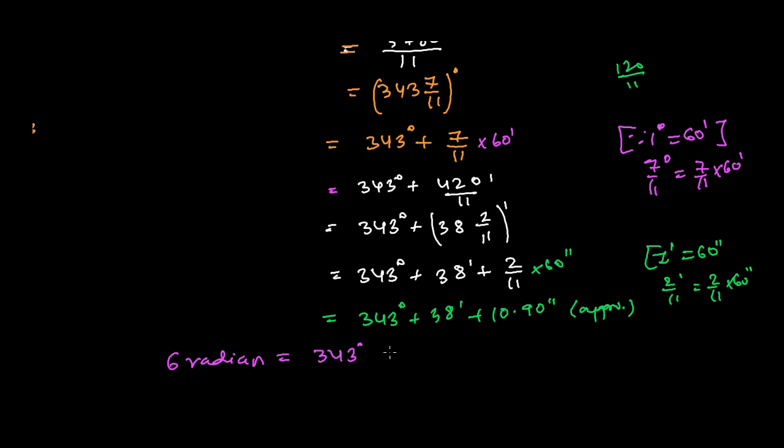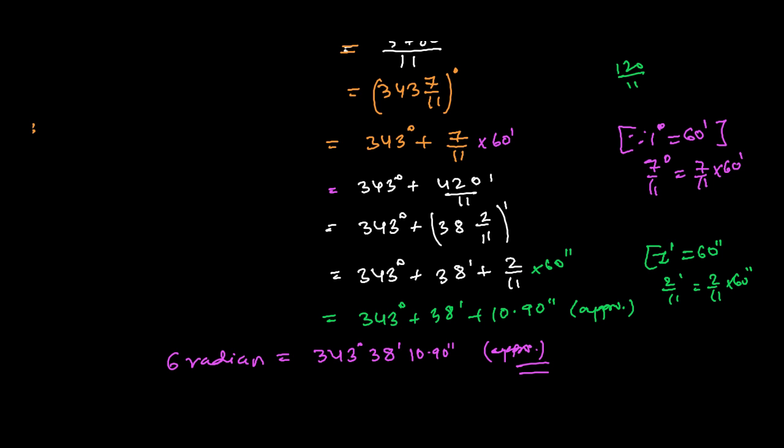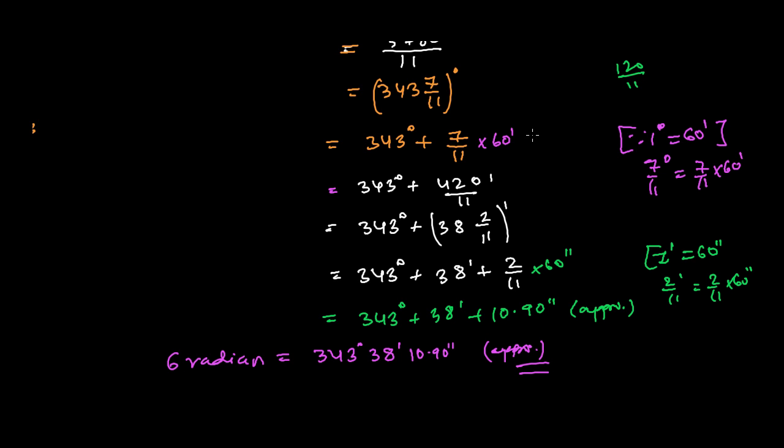Finally what we get: 6 radian is equal to 343 degrees, 38 minutes, and 10.90 seconds approximately. This is the approximate value, and this is how we need to convert a given radian into degrees.